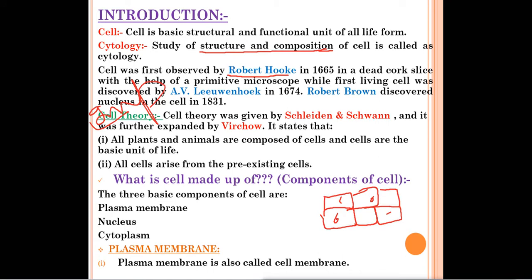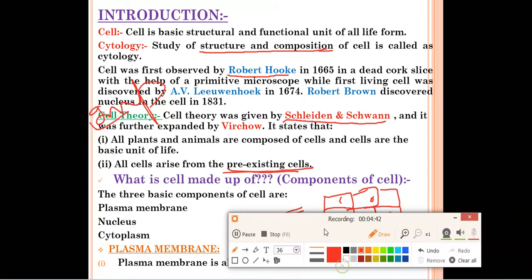Cell theory was given by Schleiden and Schwann, and it was further expanded by Virchow. The cell theory states: all plants and animals are composed of cells, and cells are the basic unit of life — meaning all living organisms are made up of cells. The second point, added by Virchow, is that all cells arise from pre-existing cells — new cells come from older cells.